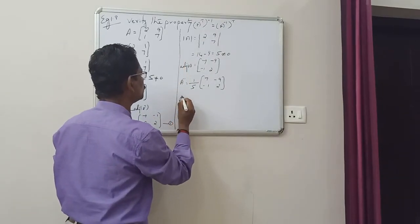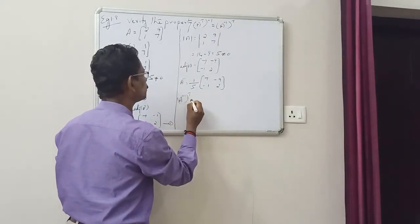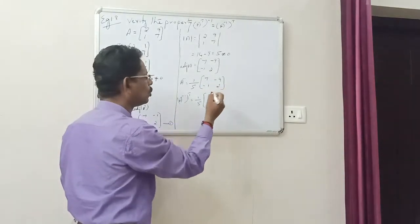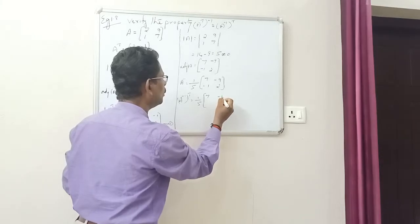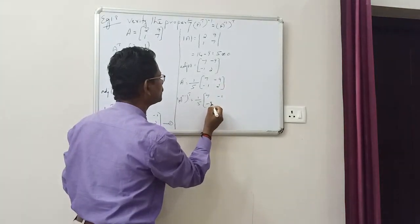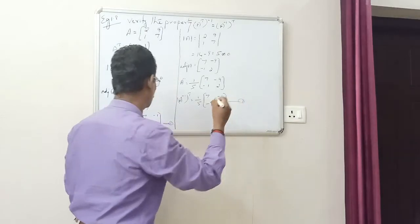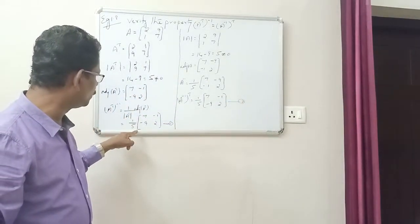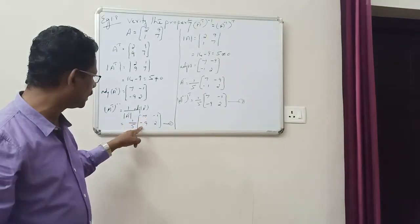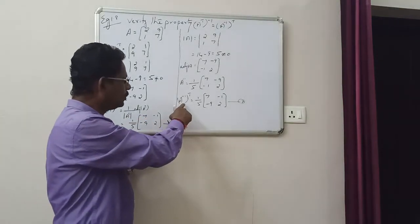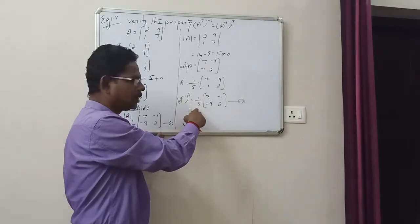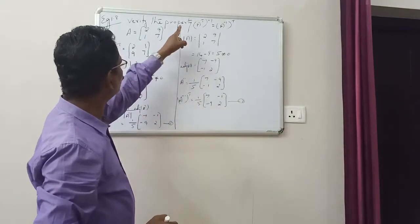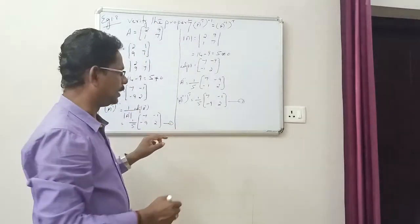Now A inverse the whole transpose. A inverse the whole transpose equals 1/5 times the transpose of [[7, -9], [-1, 2]], which gives 1/5 times [[7, -1], [-9, 2]]. This is equation number 2.